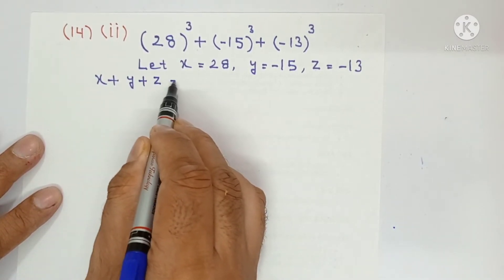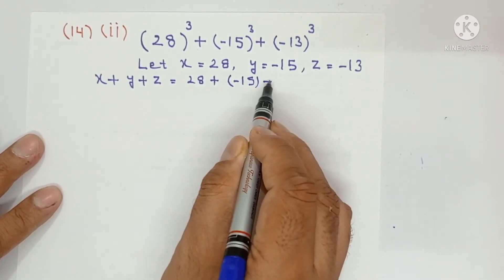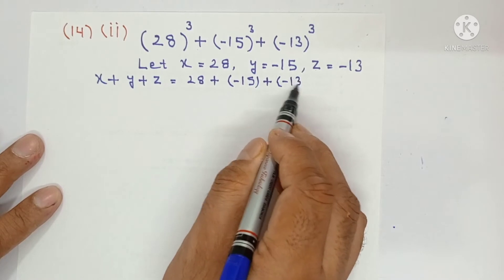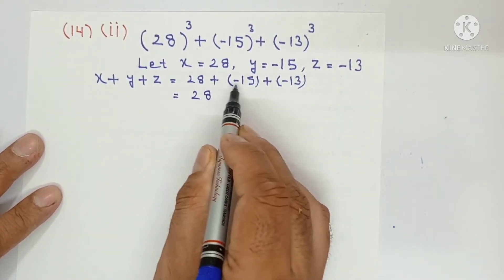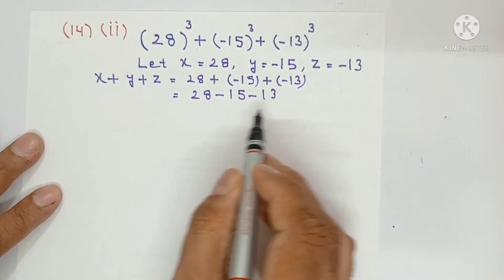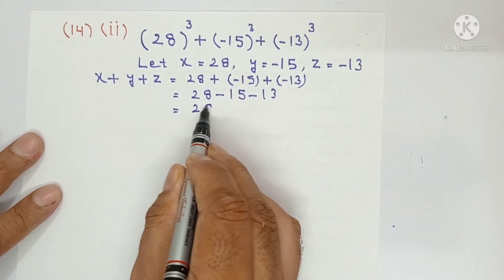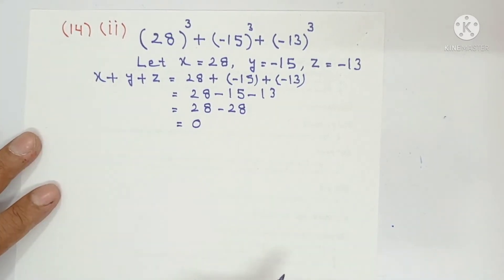Now find x plus y plus z. 28 plus minus 15 plus minus 13. So this becomes 28 plus minus 15 plus minus 13, which equals 28 minus 28 is equal to 0.